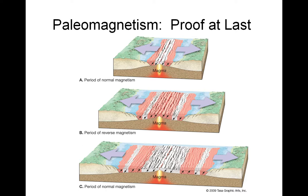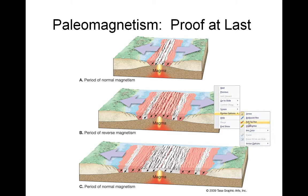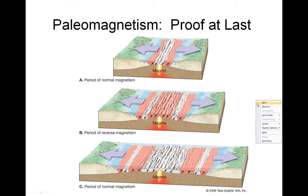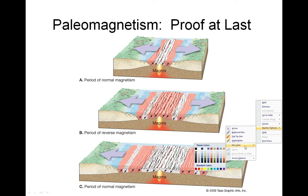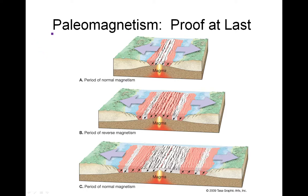The evidence for seafloor spreading is really going to come from paleomagnetism. What does paleomagnetism mean? Well, paleo means past, so paleomagnetism is going to be the past magnetism of the Earth. This really is concrete proof that the seafloor has spread and the continents have moved.